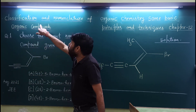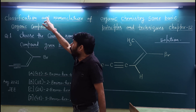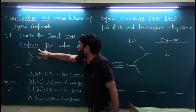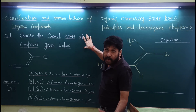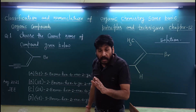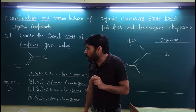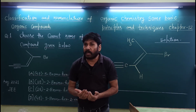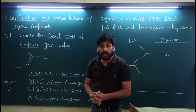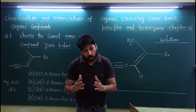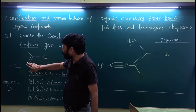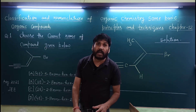तो चलिए पहला question हम देखते हैं — August 2021 JEE का question है, classification से लिया गया है organic chemistry में। Question है: Choose the correct name of the compound given below। इस structure का IUPAC name लिखना है। लेकिन इसमें एक सबसे बड़ी बात है — IUPAC के साथ-साथ इसमें geometrical isomerism का भी use किया गया है, जिसमें हम Z और E nomenclature करते हैं।